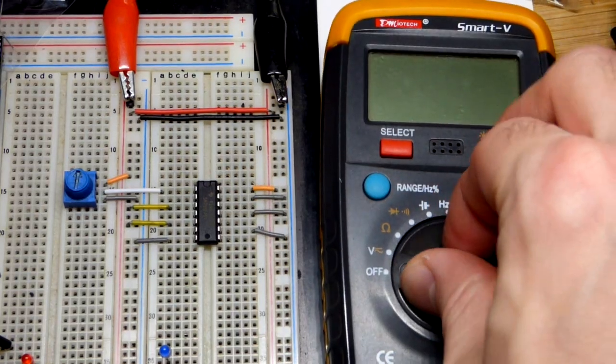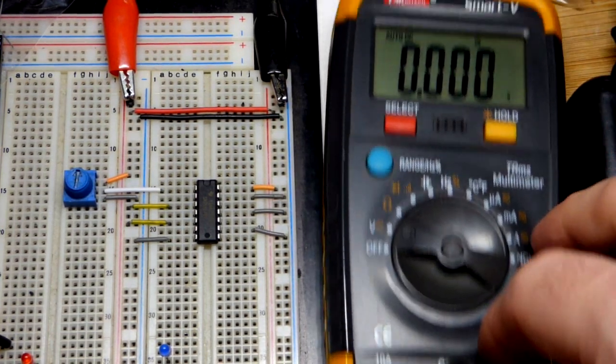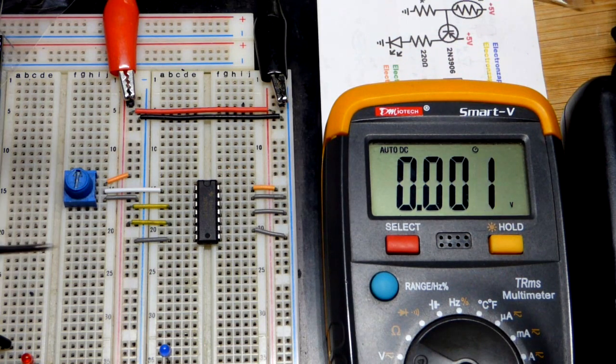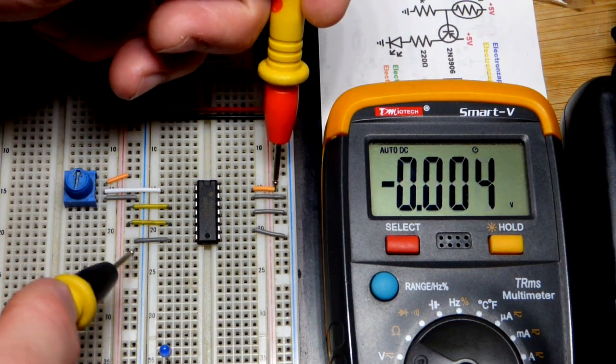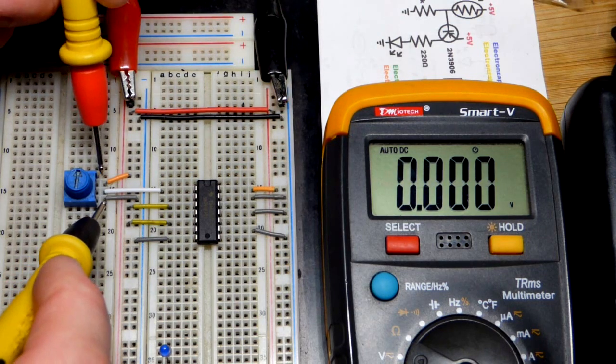So now to begin with, to take the measurement, we're going to use the multimeter. This is auto-ranging. All I have to do is set it to V for voltage and it does the rest. And we can look at the supply rail voltage first and see that it is 2 volts. Not perfectly 2 volts, but close enough.